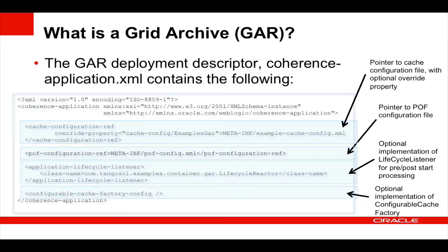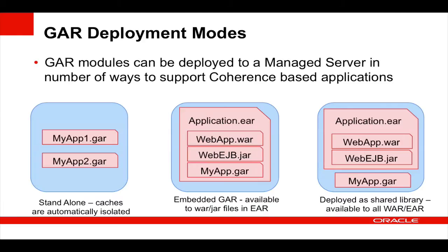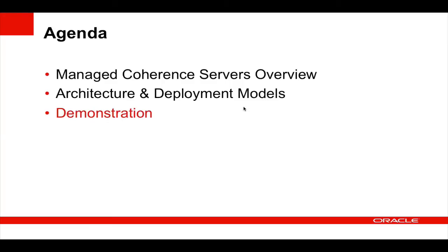GAR modules can be deployed to a managed server in a number of ways. Firstly, they can be deployed as standalone — myapp1.gar and myapp2.gar are two different GAR files and even if they have the same caches, they will be automatically isolated from each other. You can embed a GAR file in an EAR file, which means all the resources and classes within the GAR file are automatically made available to any resources or applications within the EAR, such as the web application and the EJB application. We can also deploy a GAR file as a shared library and reference it in our application deployment so it is made available to the components in the EAR file.